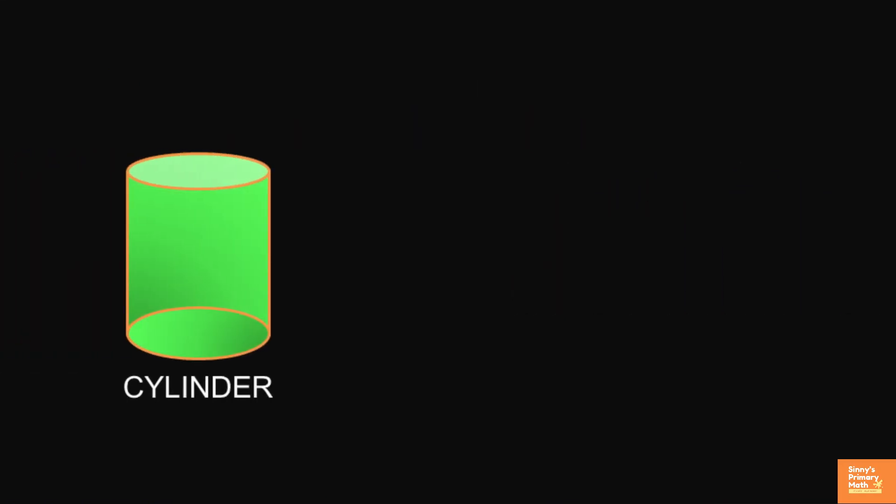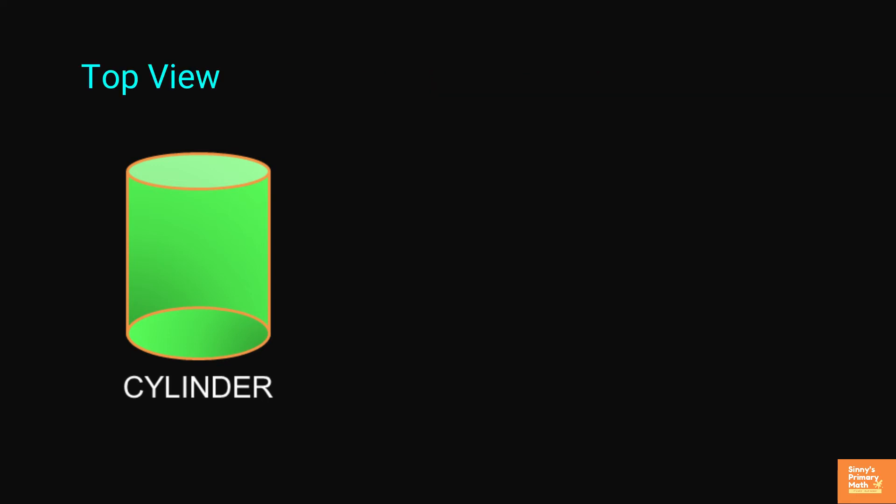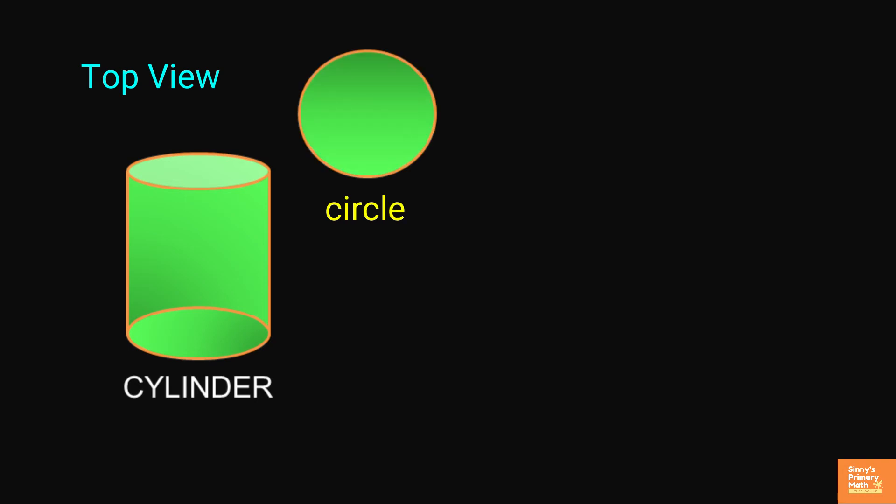Cylinder. A cylinder is a three-dimensional solid that contains two parallel bases connected by a curved surface. The bases are circular in shape. Top view: when we see the cylinder from the top, then it looks like a circle.